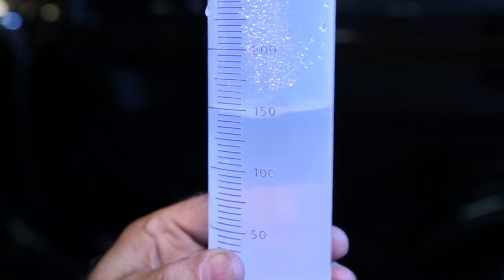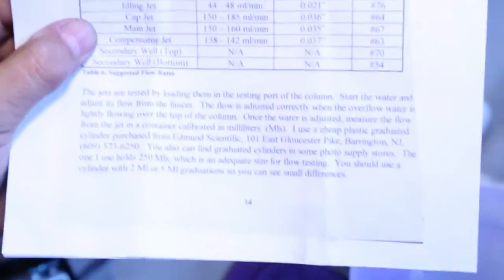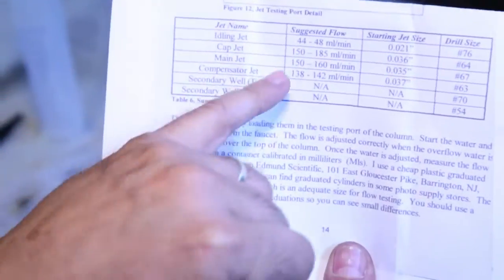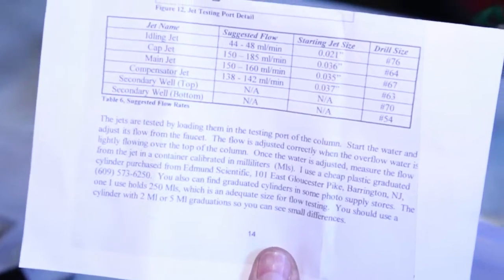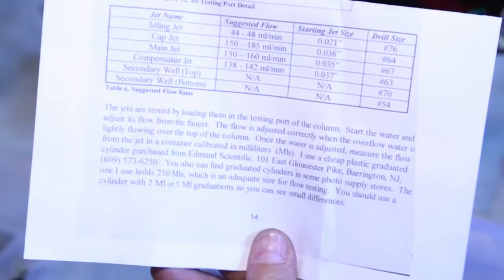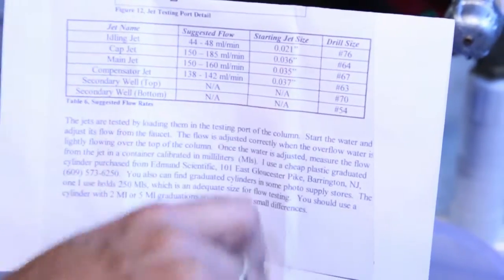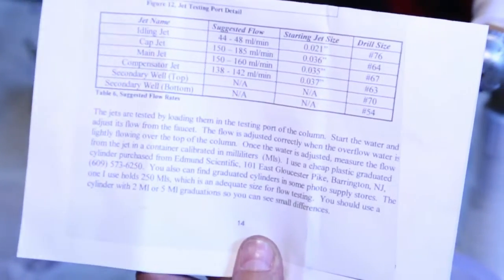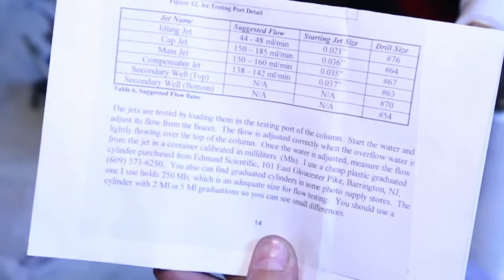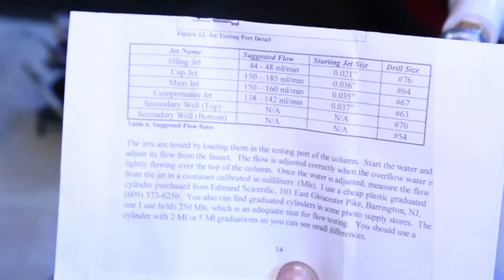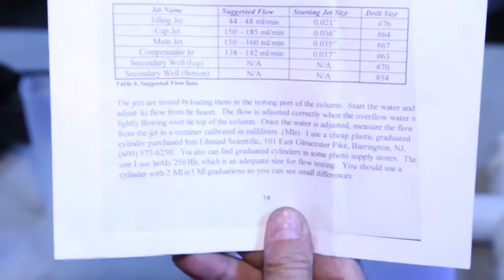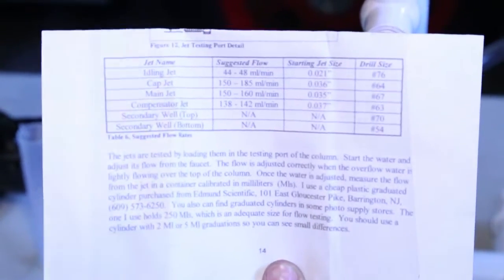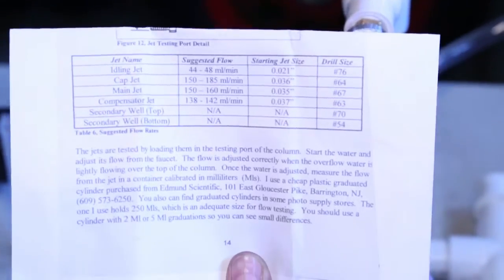Can you see the water level? That is a cap jet, the one that we just measured. It's supposed to be from 150 to 185. So even though I drilled it at 30 thousandths hole, it's still within tolerance. It's at the 150. So to me, that's a good one. I'd rather have them running a little bit leaner at the bottom end because these cars waste a lot of fuel. You'll get better fuel mileage if your jets are to the low side of the suggested flow.